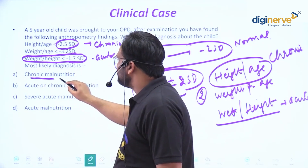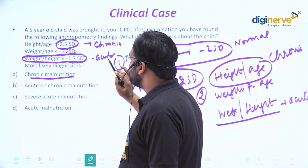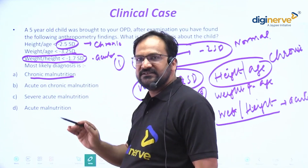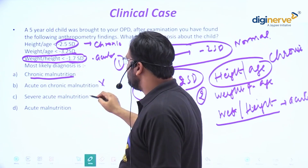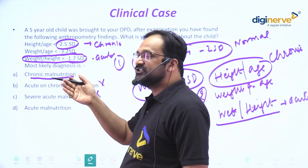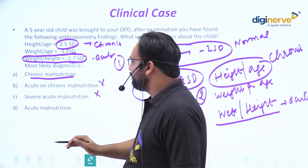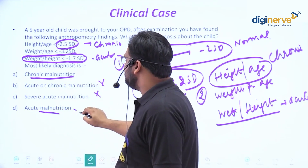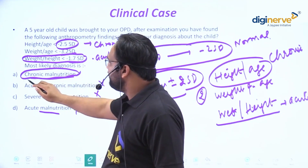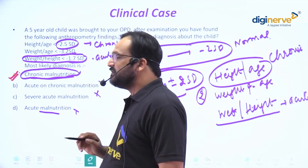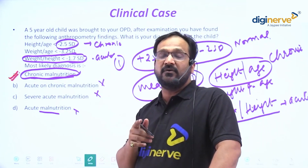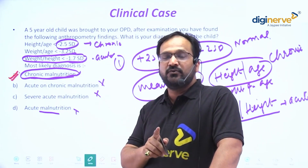Going through the options: chronic malnutrition mild-to-moderate is our answer. It is not acute because weight-for-height is minus 1.7 SD, which is normal. Severe acute is wrong because for severe acute it must be below minus 3 SD, and acute malnutrition is also wrong as weight-for-height is normal. By exclusion, the answer is chronic malnutrition.